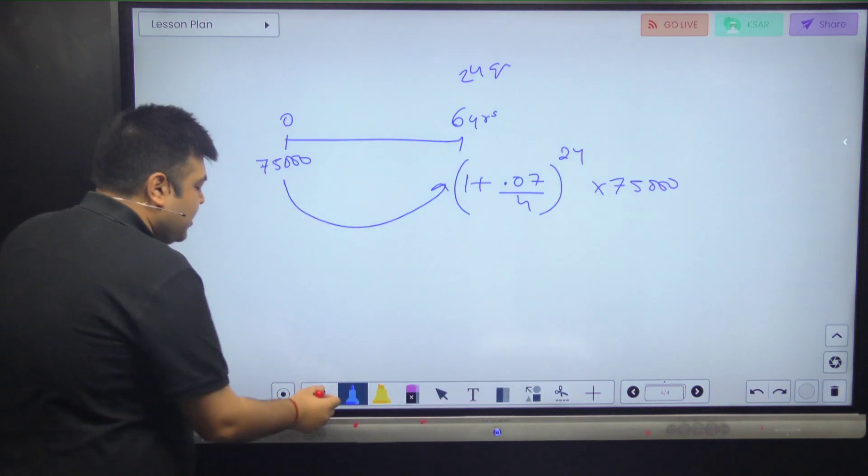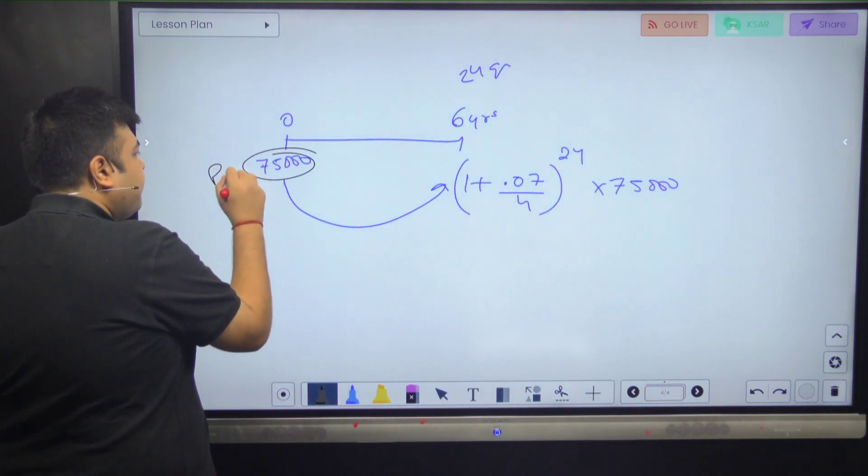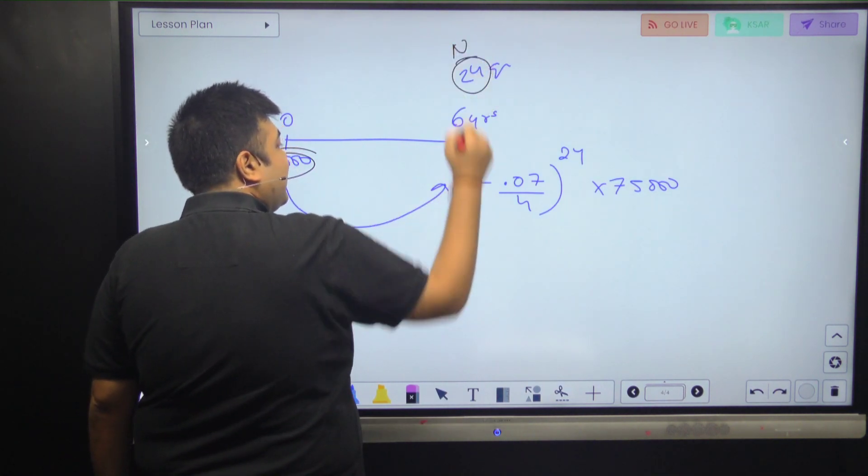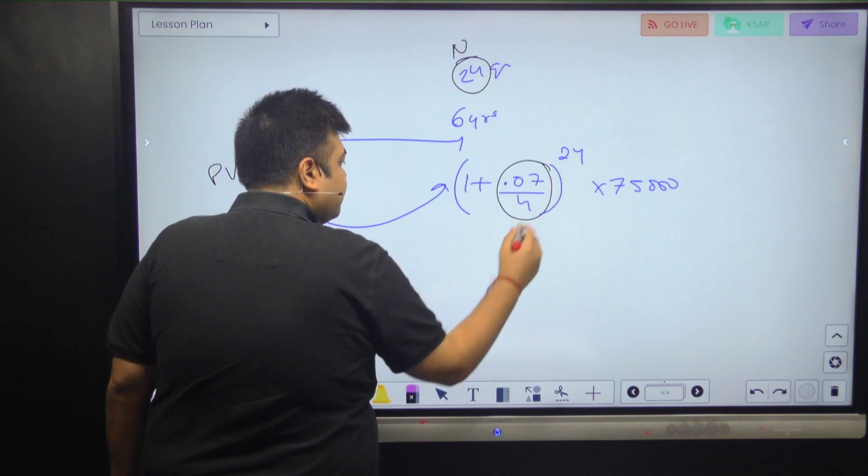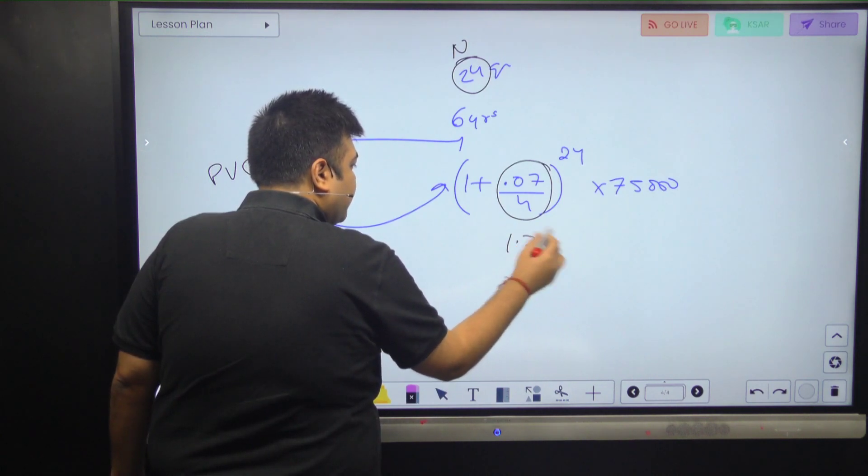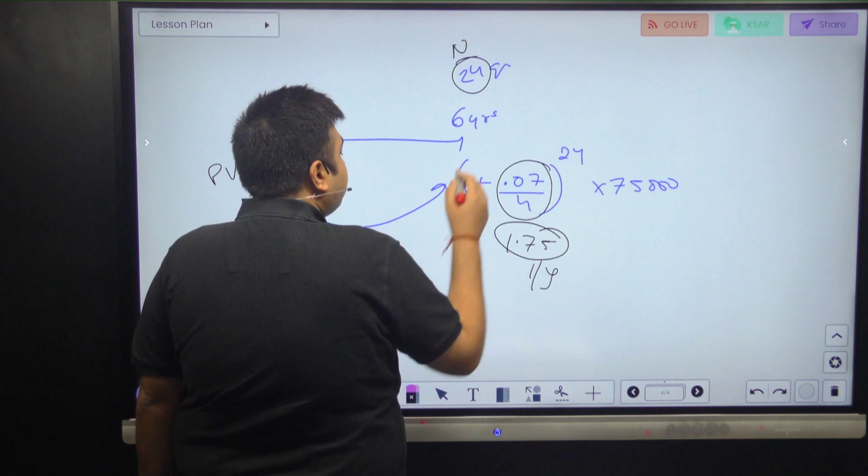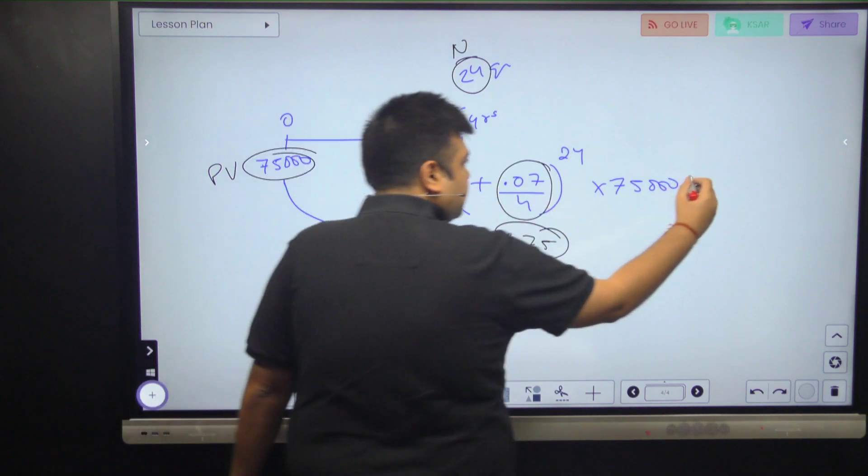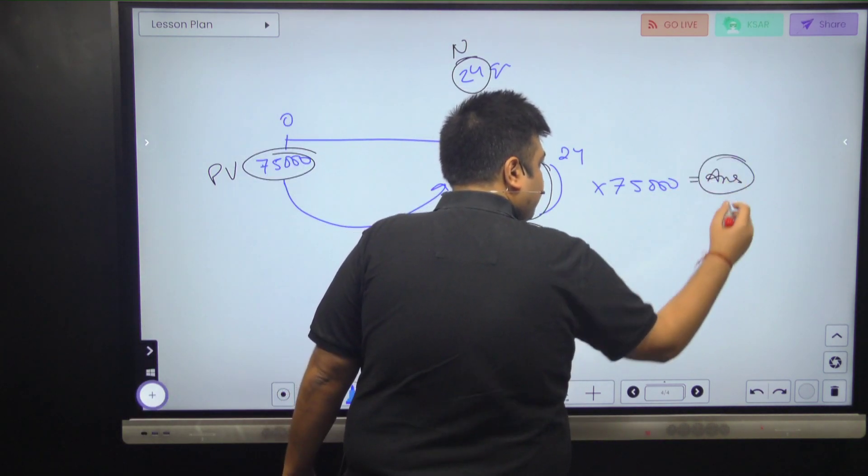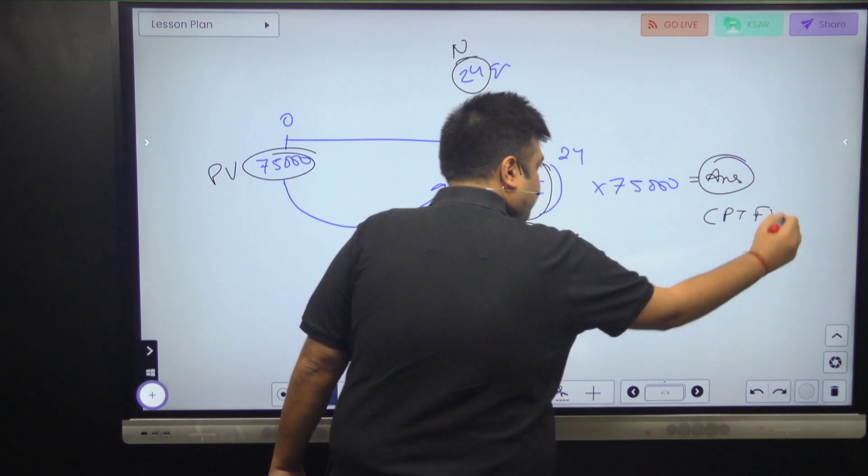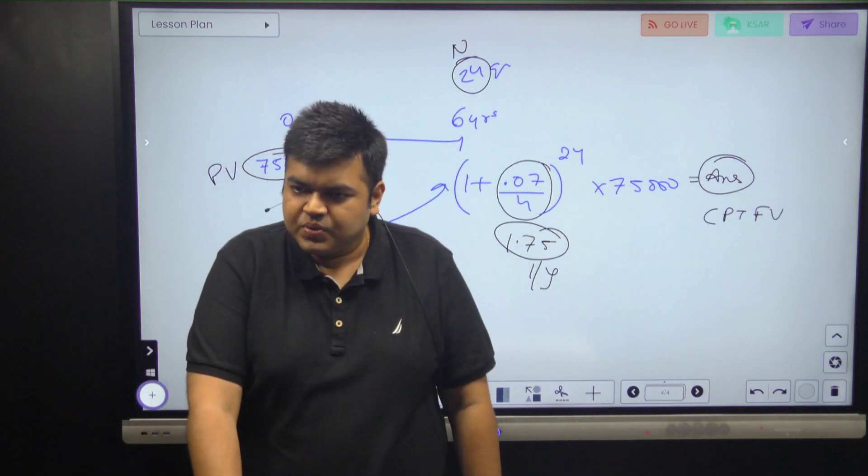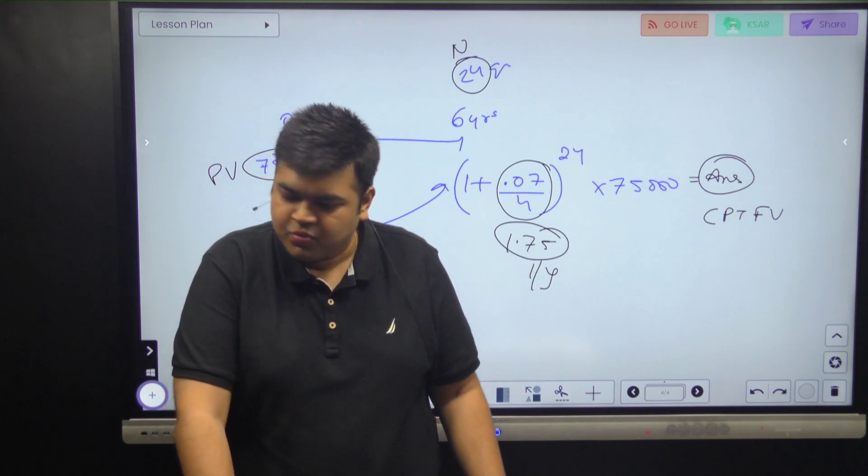Or if you want, PV, N, 1.75 - not 0.0175 - I/Y, PMT is nothing, and you compute. You can do it this way as well. This is a very easy question. I hope we can move forward.